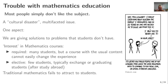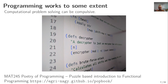The interest in mathematics courses — when required — gives us many students, but a course with the usual content cannot easily change their experience. When it's an elective course, we have few students, typically exchange or graduating students who have already made the transition and found it useful. Traditional mathematics fails to attract students. Programming works to some extent since computational problem solving can be quite compulsive, and we have a successful course in functional programming — but again, only those who are really interested in programming come.